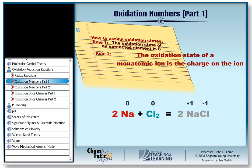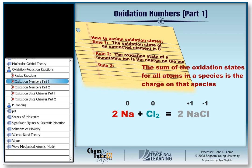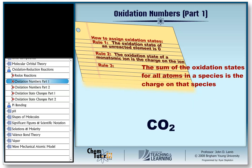The next rule: the sum of the oxidation states for all atoms in a species is the charge on that species. In sodium chloride, the overall charge is zero, and the sum of the oxidation states — plus one for sodium and minus one for chloride — is also zero. Consider carbon dioxide: if the oxidation state of oxygen is minus two, and there are two oxygens totaling minus four, then carbon must be plus four to make the total zero. For the nitrate ion, with a total charge of minus one, three oxygens at minus two each total minus six, so nitrogen must be plus five.